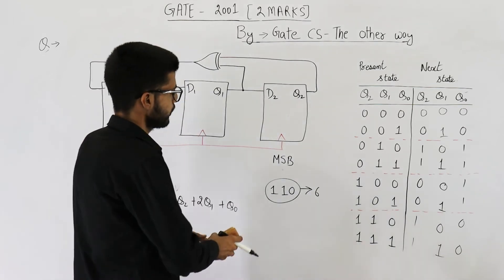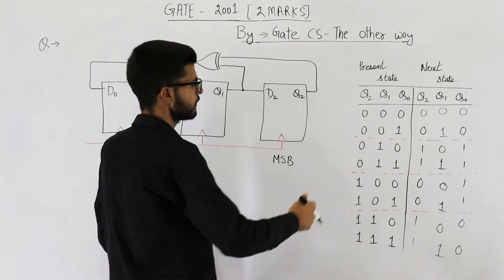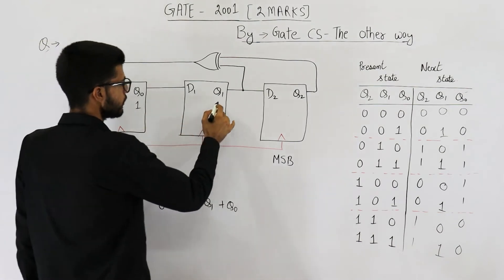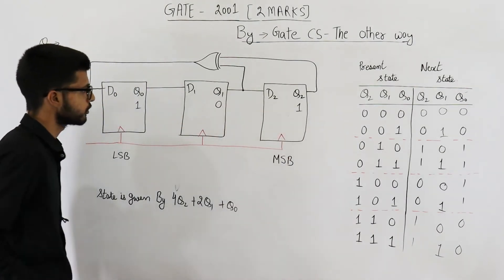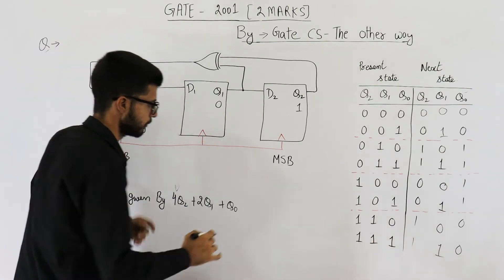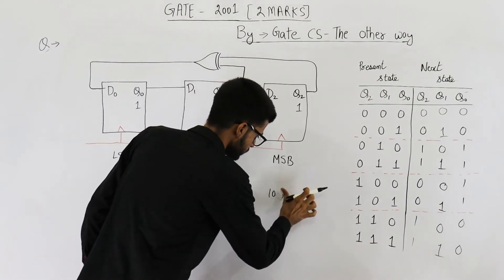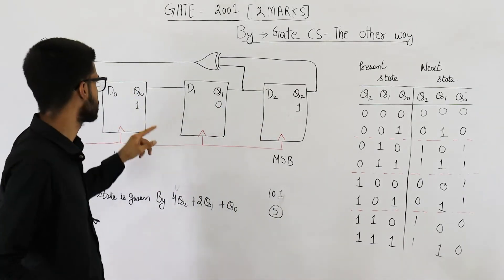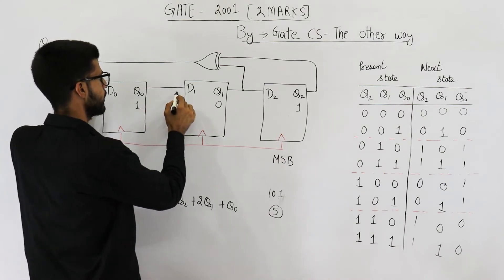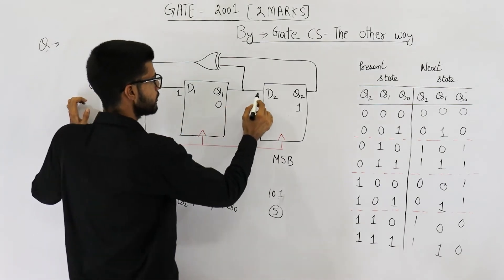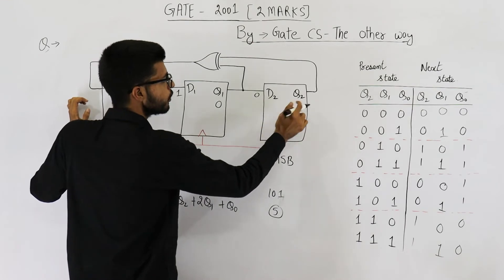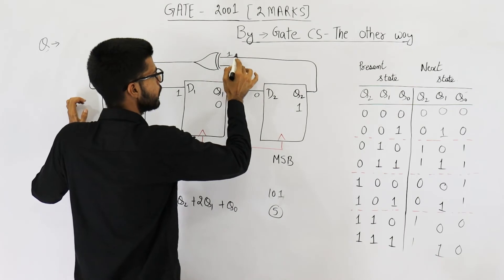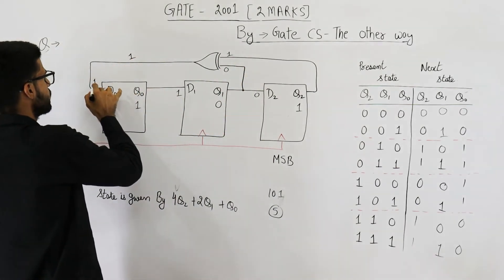Now, let us just take one example so that we understand this table properly. So this is 1, this is 0, this is 1. So the state is 1, 0, 1, which means 5. This output is 1, that means we have a 1 here. This is 0, that means we have a 0 here. 0 XOR 1 will give you 1, so we have a 1 here.